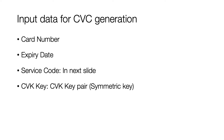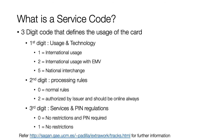Now let's look at the input data required for generating a CVC. The first is the card number, the second is the expiry date, the third is the service code (covered in a subsequent slide), and lastly the CVK key — a symmetric key pair generated by the issuer, used both for generating the CVC and validating it. It is unique for every card BIN range.